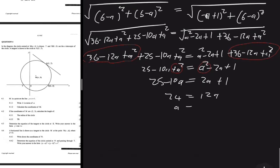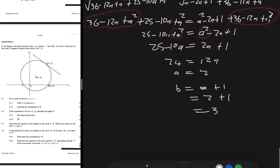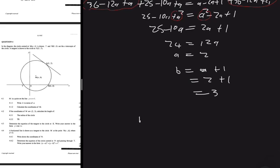So A equals 2. If A equals 2, then B equals A plus 1, which is 2 plus 1, so B equals 3. Therefore, the coordinates of M are (2, 3).